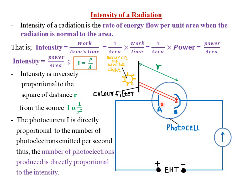The extra high tension keeps plates A and B at very high potential differences, so that any electrons emitted will be transmitted, causing a deflection in the galvanometer, indicating that some current is flowing.